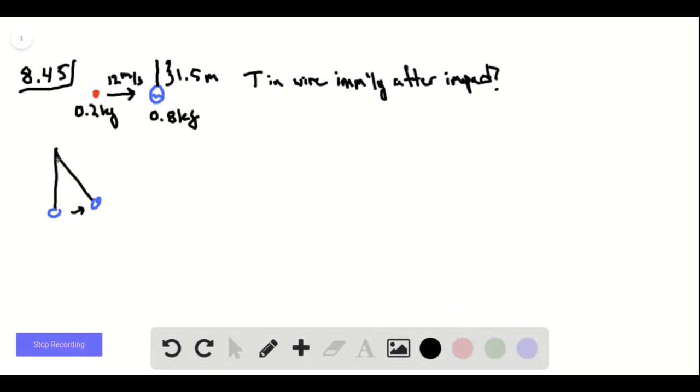Before getting to that, we need to know how fast it's going because we're going to use that the centripetal acceleration is v squared over r, so we would like to know what v is.